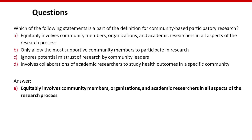Question two: Which of the following statements is a part of the definition for community-based participatory research? A: Equitably involves community members, organizations, and academic researchers in all aspects of the research process. B: Only allow the most supportive community members to participate in research. C: Ignores potential mistrust of research by community leaders. The answer is A: equitably involves community members, organizations, and academic researchers in all aspects of the research process.